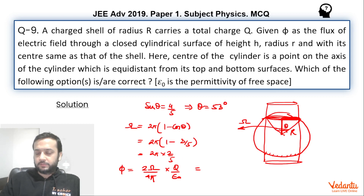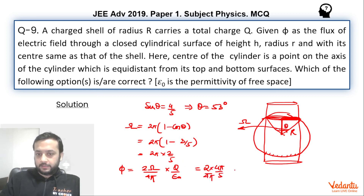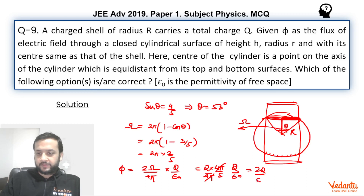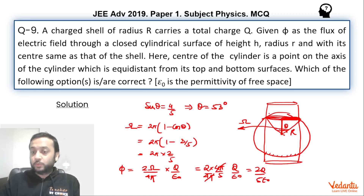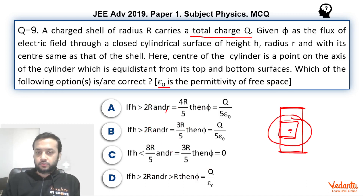So the total flux becomes 2 × (4π/5) / 4π × q/ε₀ = 2q / 5ε₀. This does not match option A, so option A is wrong. Remember here we have assumed that the charge has been uniformly distributed on the shell.